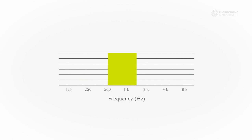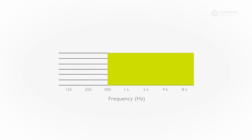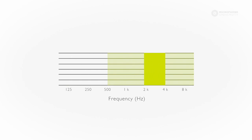Consonants are predominantly found in the frequency range above 500 Hz, but most of them are in the area between 2 to 4 kHz. This part of the frequency range is therefore one of the most important areas to preserve when focusing on speech intelligibility.